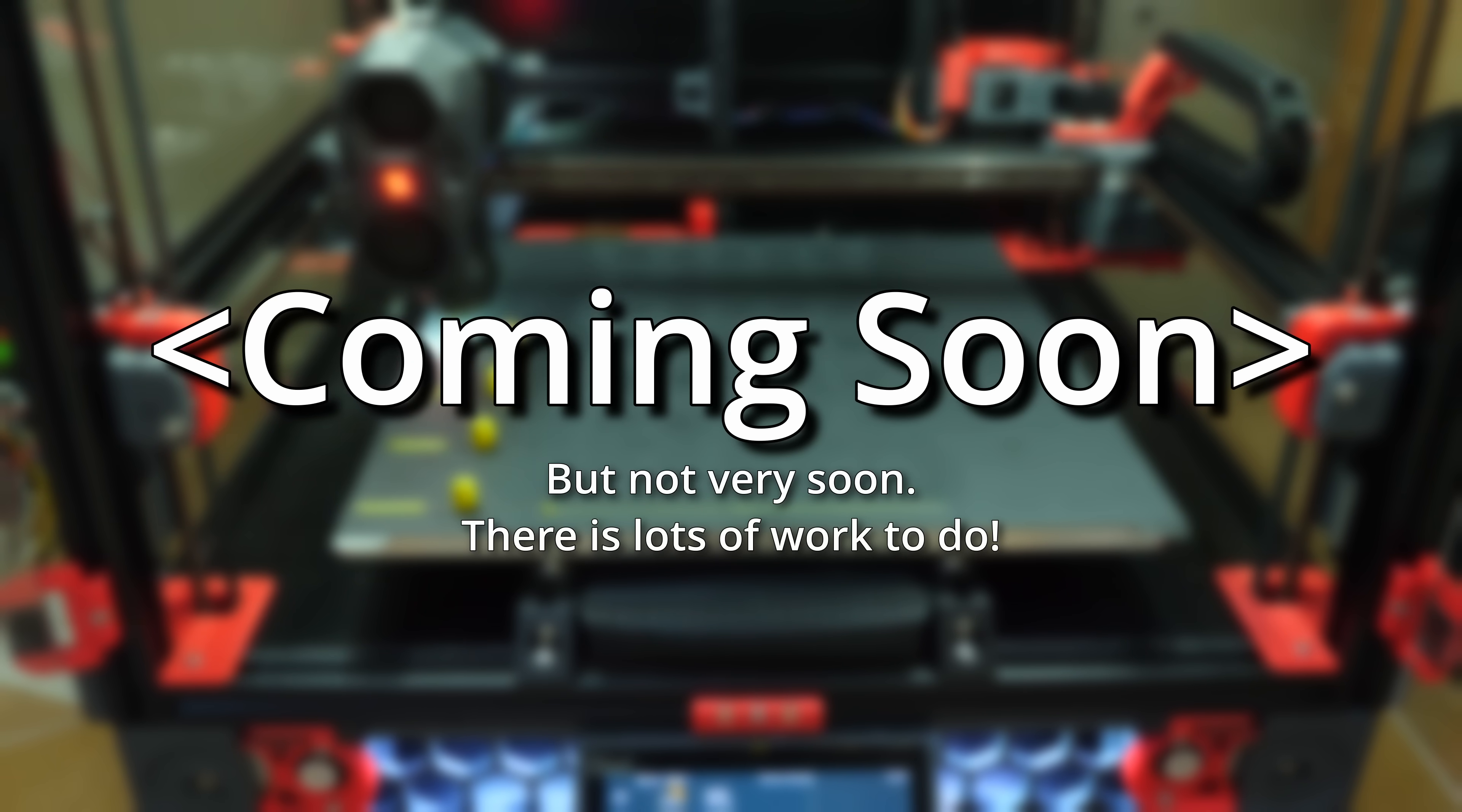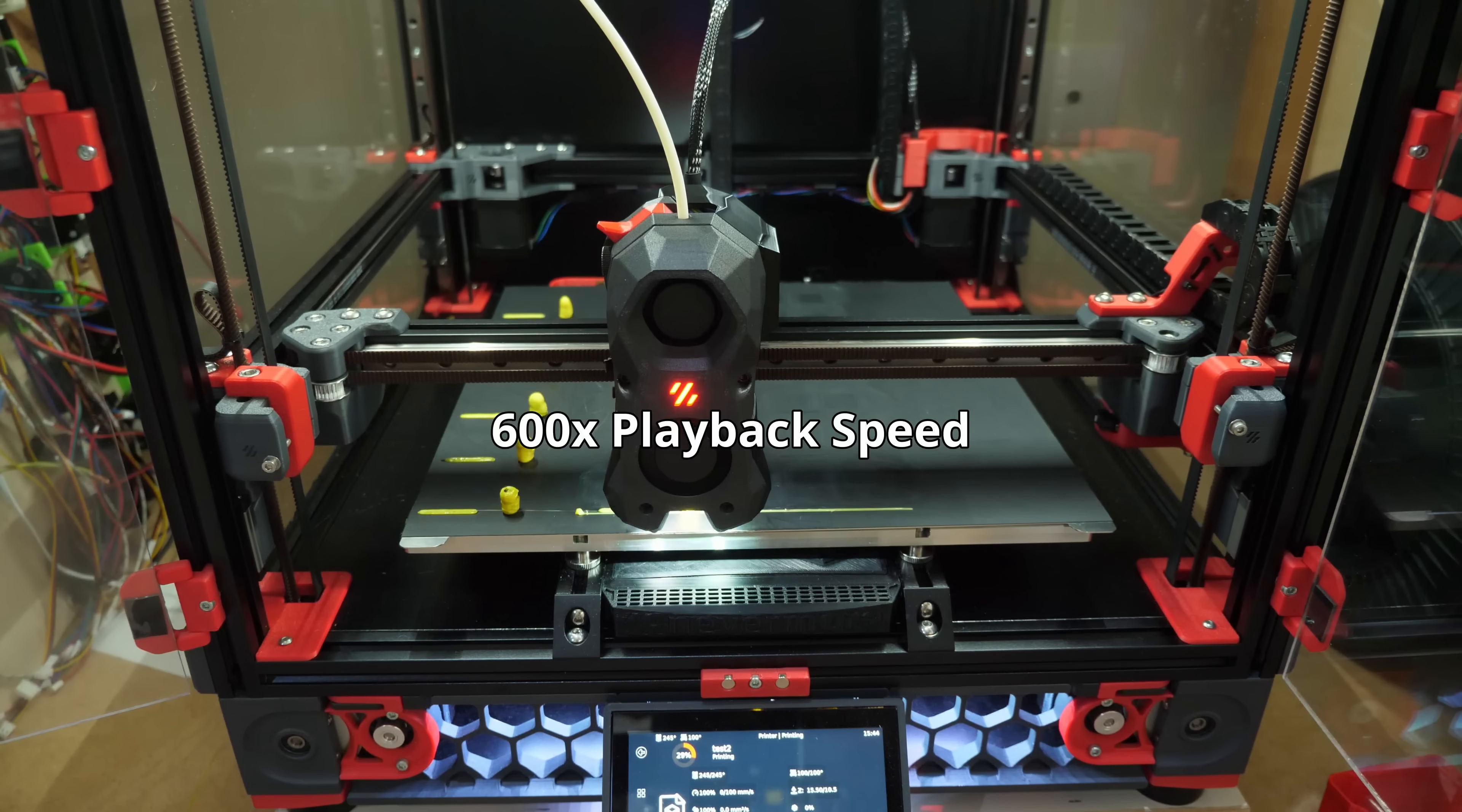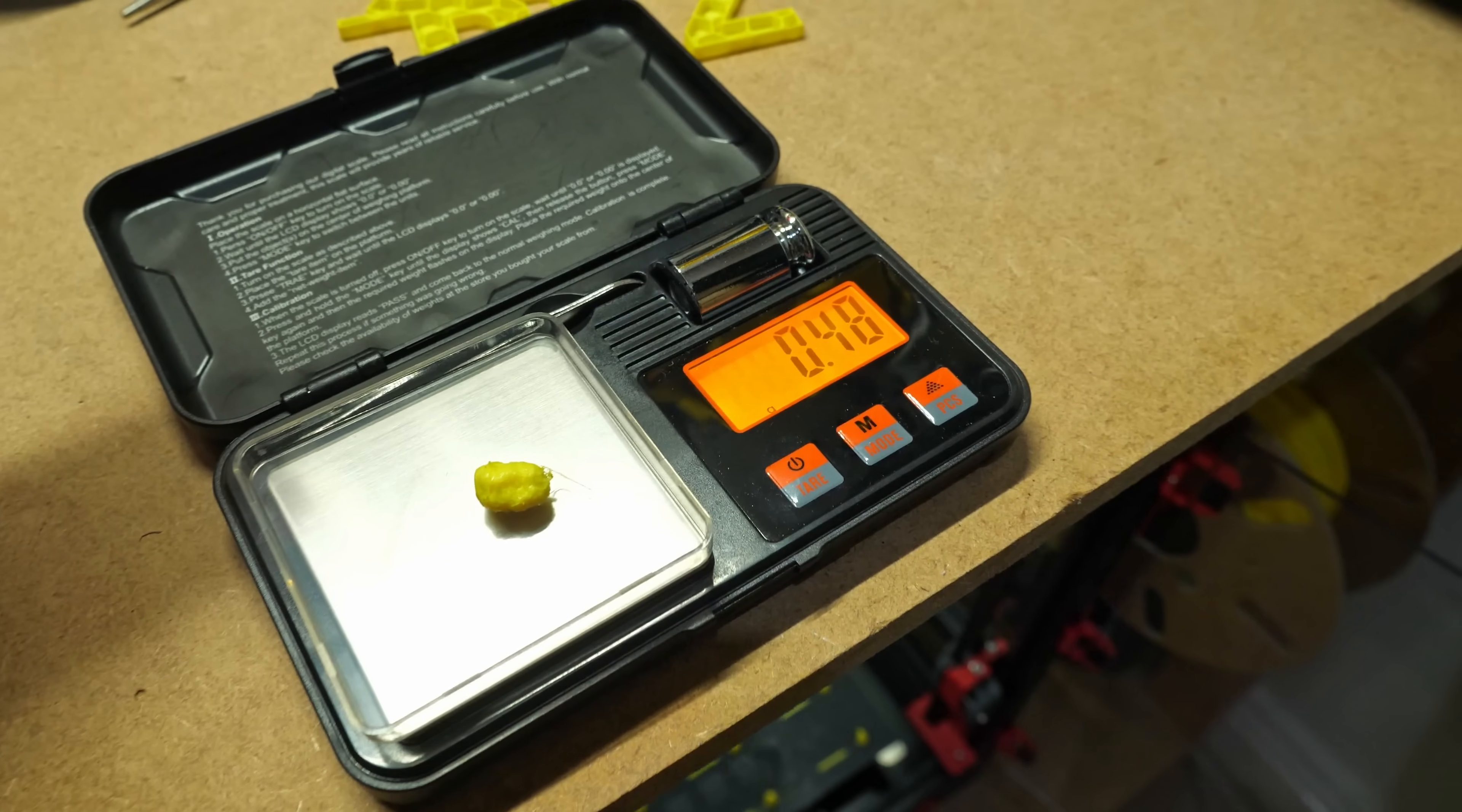Unfortunately version 2 of my extrusion force testing machine won't be ready for a little while still, so today I'm using the CNC Kitchen blob method which you can find linked below. This test method works by extruding a known quantity into a blob on the build plate as the nozzle moves very slowly upwards. It repeats the blobs across the plate at increasing flow rates. Once completed we can weigh all of the samples and see how the increasing flow rate affected the quantity of material extruded.